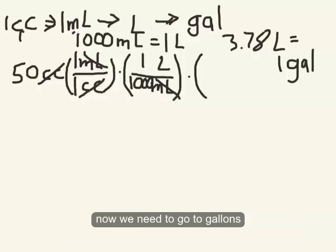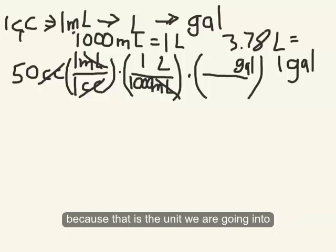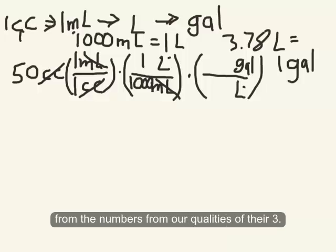And now we need to go to gallons. So again, we want gallons to be on the top here, because that's the unit we're going to go into. We're going from liters. So here, liters down here, we'll cancel liters up here. And now we just put in the numbers from our equality. So there are 3.78...